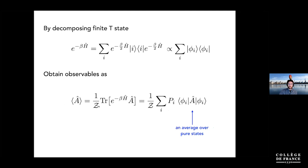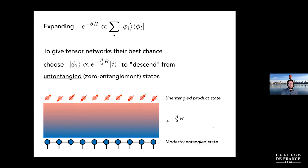If you want to compute an observable, some operator A, you trace with the density matrix. Writing it in this form means taking all these pure-state shards, summing over them with appropriate weights. Really you're taking these pure-state snapshots at finite temperature and averaging over them with appropriate weights. There's a very generic formula you can write down for density matrices of this type.